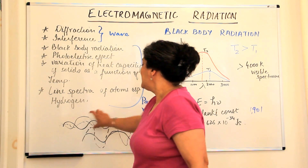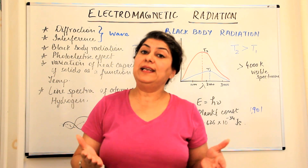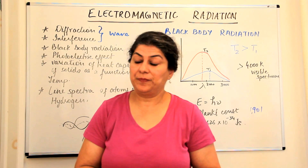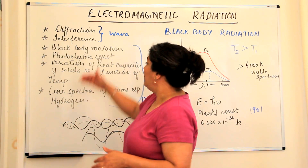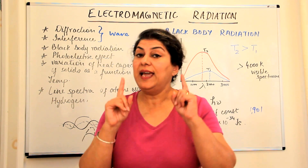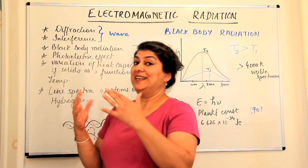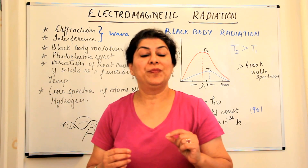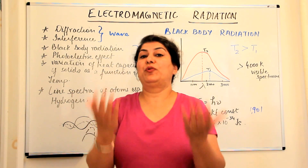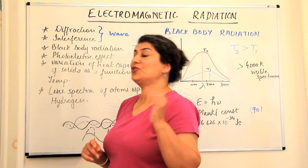So, diffraction and interference are both properties shown by light, both of which can be explained by the wave nature of light. But the following properties could not be explained by the wave nature of light. They indicated that light is not only wave-like but particle-like too, and also brought forth the concept of quantization of energy.